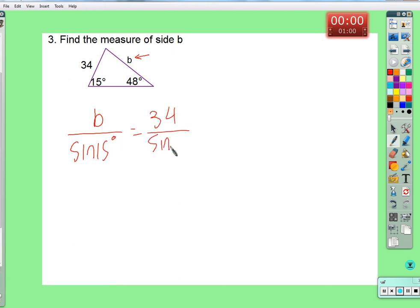So multiply by the sine of 15 on both sides. You get B equals 34 times the sine of 15 over the sine of 48. What does B equal? 11.24. That makes sense. This side shouldn't be bigger than 34. It should actually be quite a bit smaller than 34 because this angle is quite a bit bigger than 15, about three times bigger. So 11, I believe it.